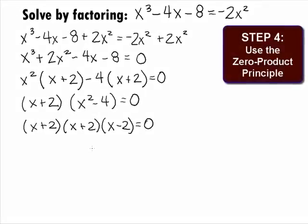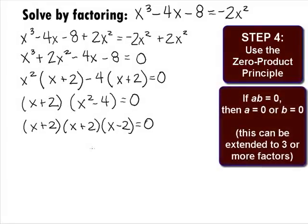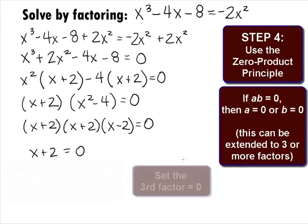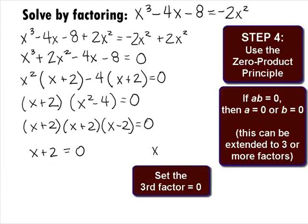In Step 4, we want to use the zero product principle. This principle states that if you have a product of factors set equal to 0, then the solution can be found by setting each separate factor equal to 0. Setting each factor equal to 0, we get x plus 2 equals 0, and x minus 2 equals 0.